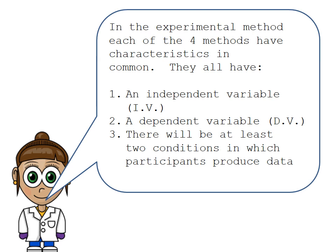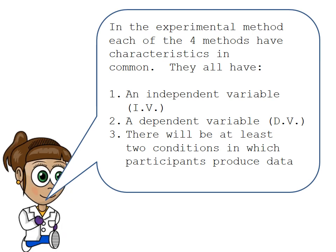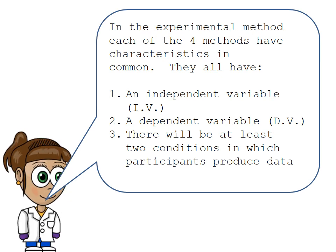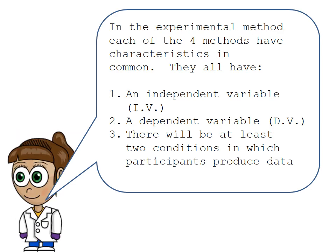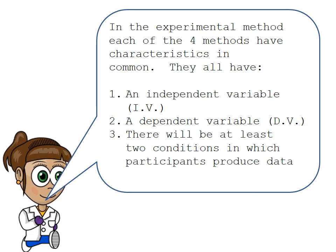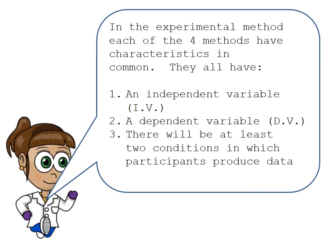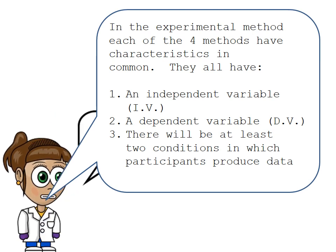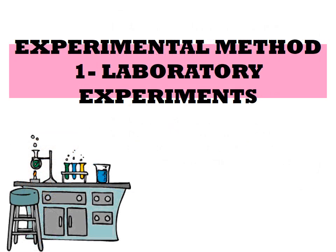In the experimental method, each of the four methods have characteristics in common. They all have an independent variable, a dependent variable, and there will be at least two conditions in which participants produce data, just like the experiment we looked at before.